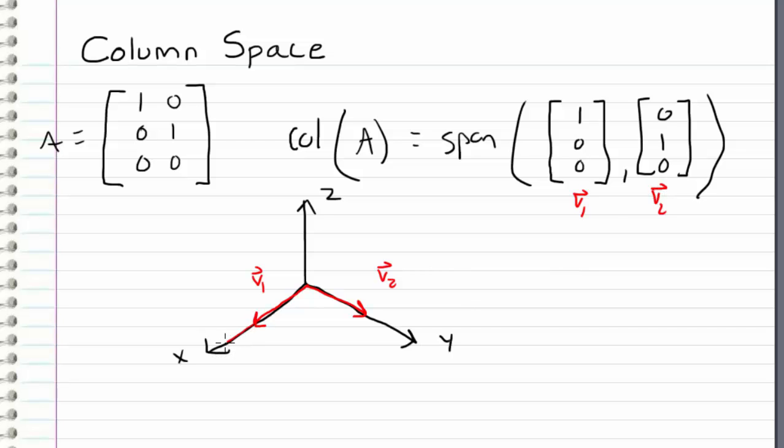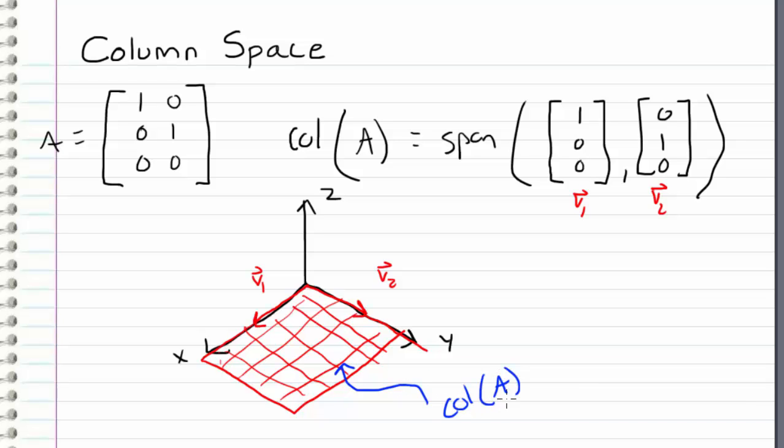So the span of these vectors is everything in the x-y plane. So this x-y plane that's spanned by V1 and V2 is the column space of our matrix A. So this plane that I have in red here represents all of the linear combinations of our columns.